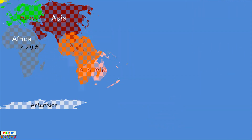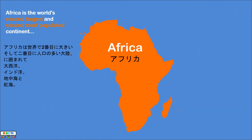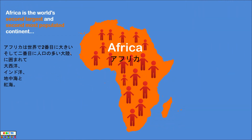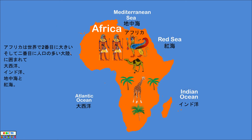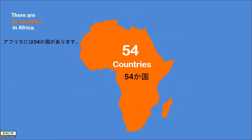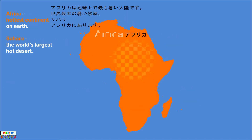Africa is the world's second largest and second most populated continent, surrounded by the Atlantic Ocean, the Indian Ocean, the Mediterranean Sea, and the Red Sea. There are 54 countries in Africa.